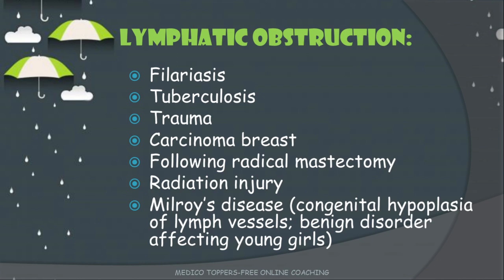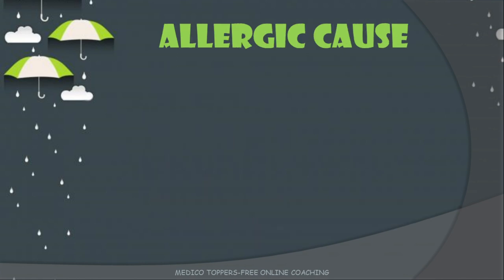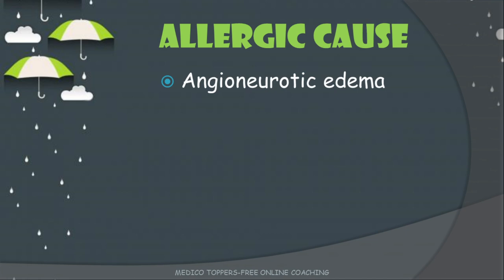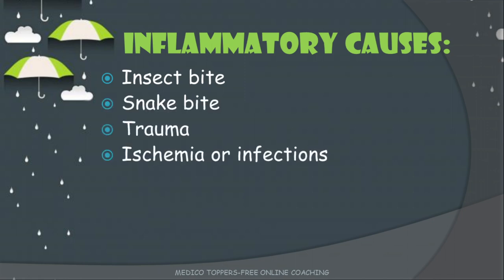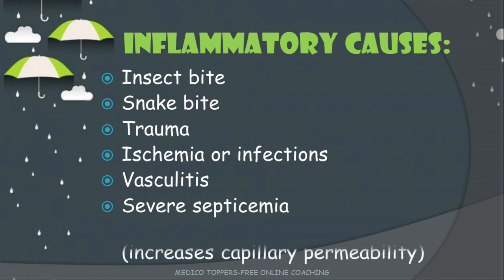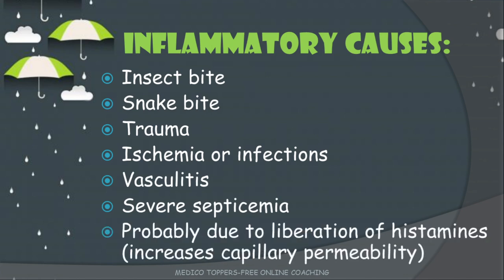Other causes of localized edema include allergic causes: angioneurotic edema, where there is swelling in the subcutaneous tissue due to destruction of mast cells and absence of C1 esterase inhibitor, comparable to urticaria; and acute anaphylaxis. Inflammatory causes include insect bite, snake bite, trauma, ischemia, infarctions, vasculitis, and severe septicemia — probably due to liberation of histamines leading to increased capillary permeability.